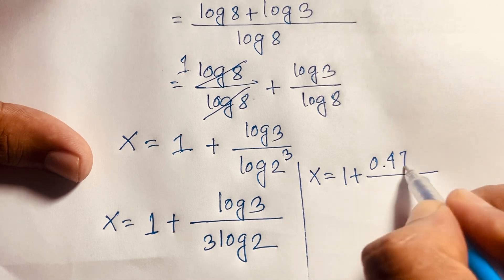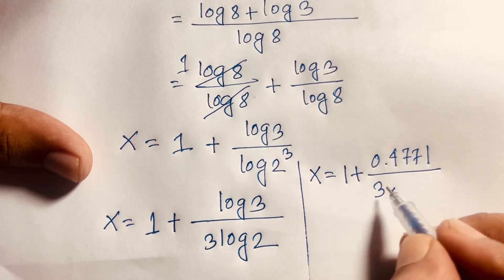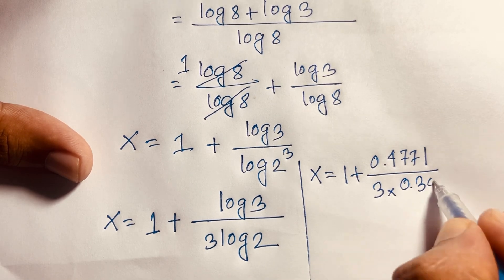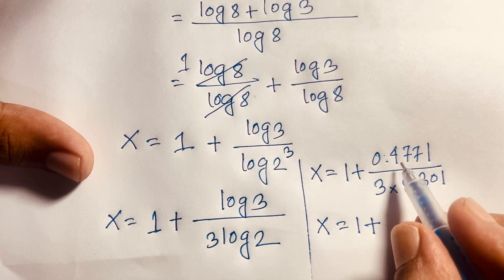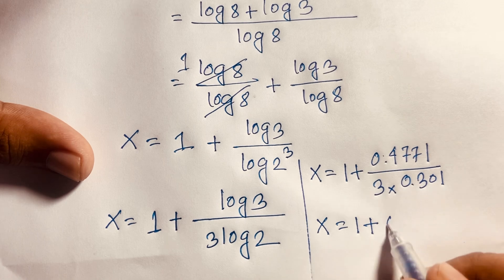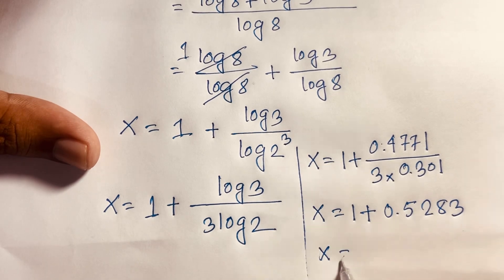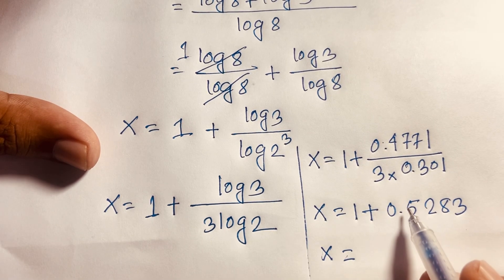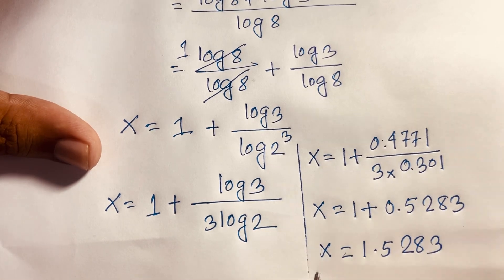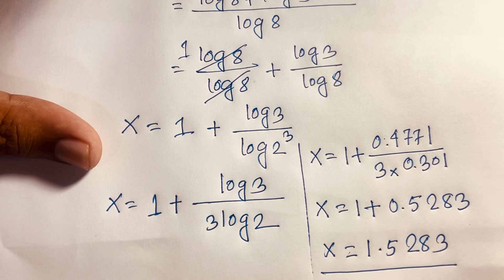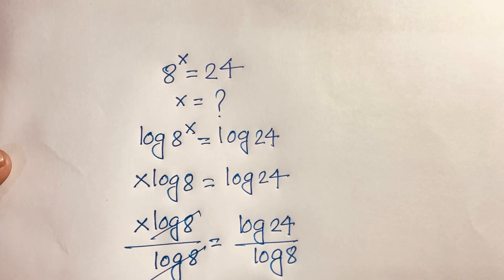Using a calculator: log(3) is approximately 0.4771 and log(2) is approximately 0.301, so 3·log(2) equals 0.903. Dividing, 0.4771 over 0.903 gives approximately 0.5283. Therefore x is equal to 1 plus 0.5283, which equals 1.5283. This is our final answer.